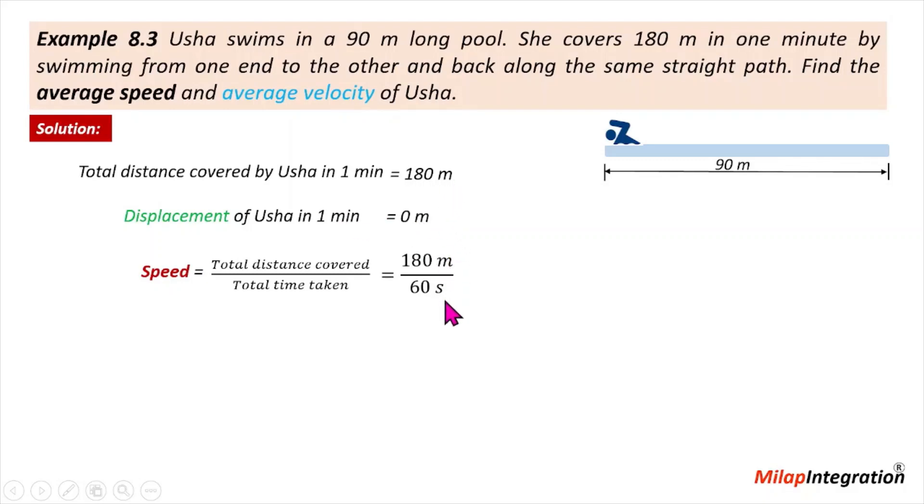We need to convert to meter per second, not meter per minute. The final answer is always in standard units if not asked. One minute is 60 seconds, so we get 3 meters per second.